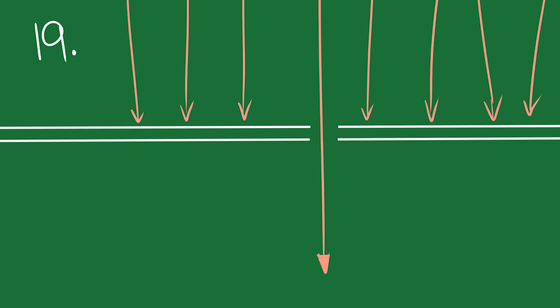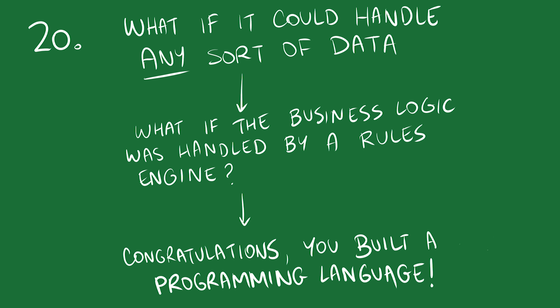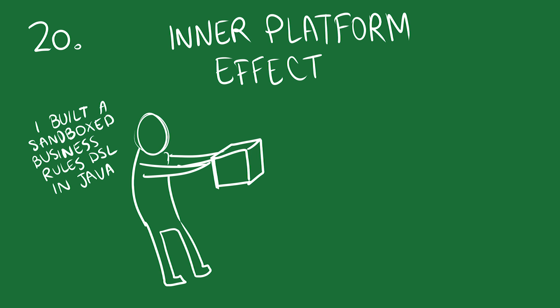19. Constantly tune the tools that you use to filter out noise and surface real problems. 20. I know your code is good, but fight the urge to make your code even more modular and general purpose. If you take it to its logical conclusion, you'll just end up building an entire programming language, and then you'll be back at square one. This happens so often that it has a name, the inner platform effect, which is what happens when a software architect creates a system so customizable that it's really just a poor replica of the software development platform that they used to build it in the first place.